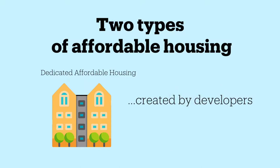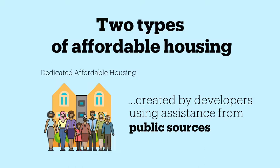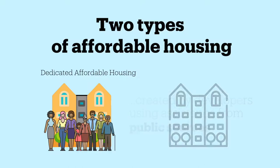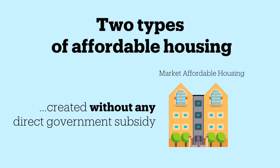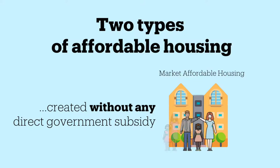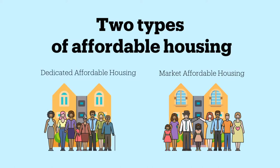These are created by developers using assistance from public sources or through affordability requirements or incentives. The second type, sometimes called market affordable housing, is housing that is created without any direct government subsidy. These units may rent or sell at affordable levels, but they do not have legally binding affordability requirements. Let's talk more about each of these.